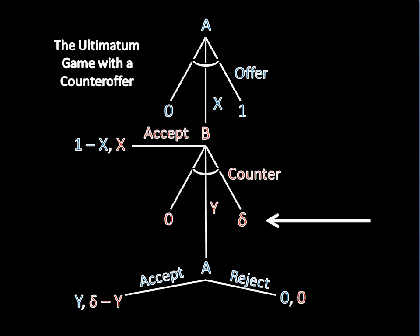Once again, we'll start at the end to solve this game. And we see that A will accept any offer greater than zero. That's just basic backward induction.